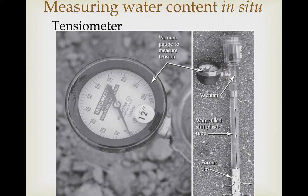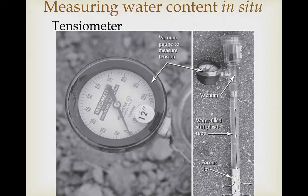Where I left off in the last video, I was telling you about the tensiometer as a way of measuring water content. But one of the cool things about the tensiometer is it's not trying to measure water content as much as it is directly trying to measure matric potential. So that brings us back to the sometimes confusing world of potential, where we last were when we were talking about plant water potential.